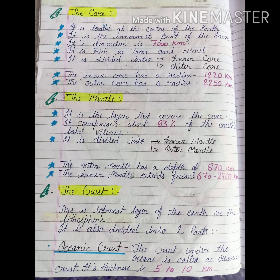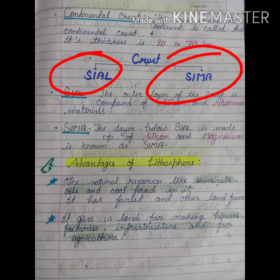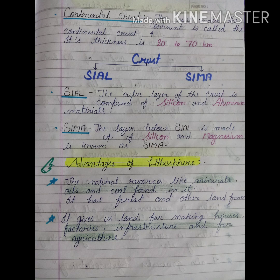The oceanic crust is the crust under the ocean, and its maximum thickness is 5 to 10 km. The continental crust is the crust under the continents — we have 7 continents, so all those crust layers are called continental crust, with a thickness of 20 to 70 km. Within the crust there are SIAL and SIMA, which are mineral names.